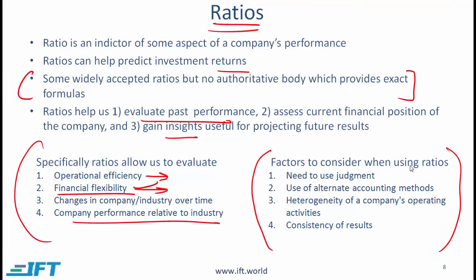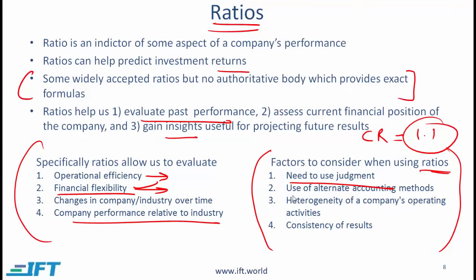Some factors to consider when using ratios: you need to use judgment. If a current ratio — current assets over current liabilities — equals 1.1, is this good or bad? The answer requires judgment; you need to evaluate the specific company and look at the ratio in the context of the industry. There isn't always a right or wrong answer. You also need to recognize that different companies may use different accounting policies, and you need to make adjustments to compare ratios across companies.